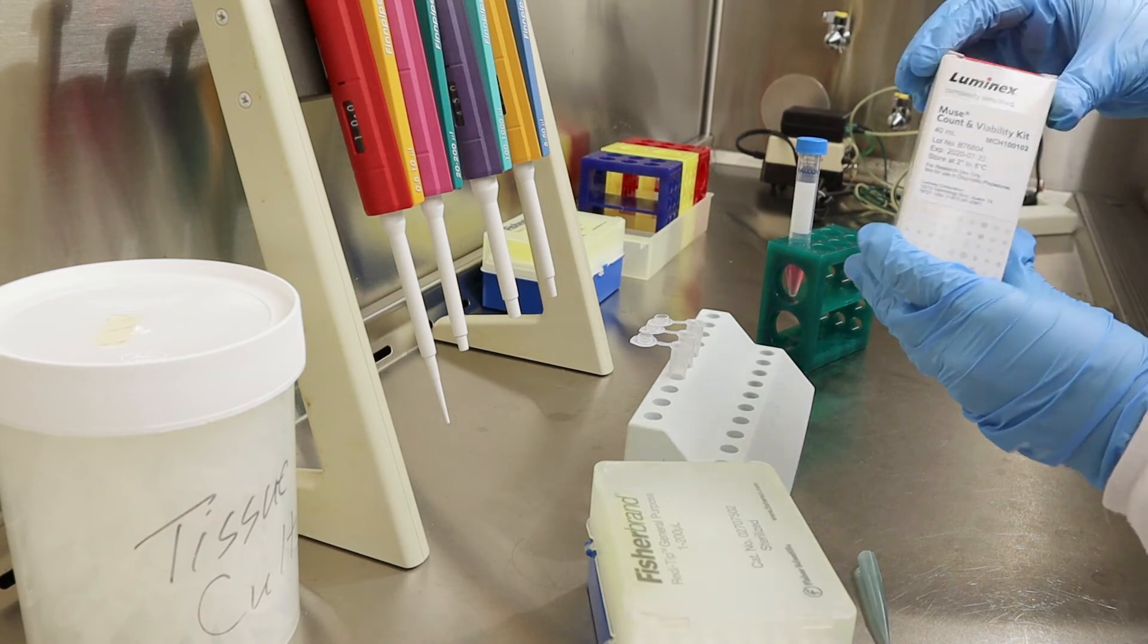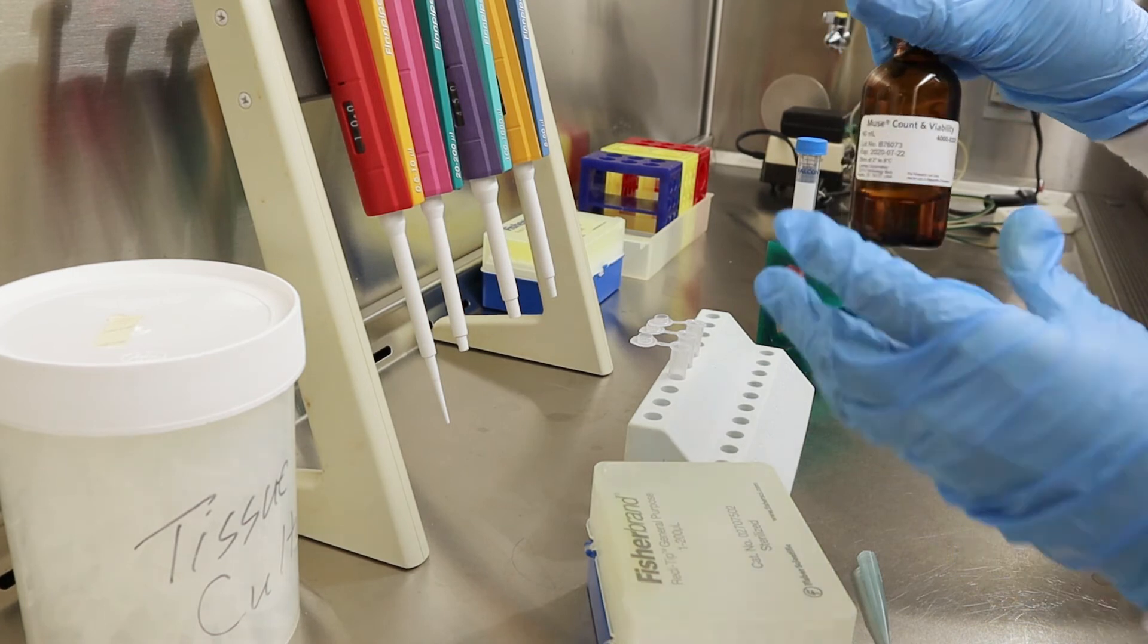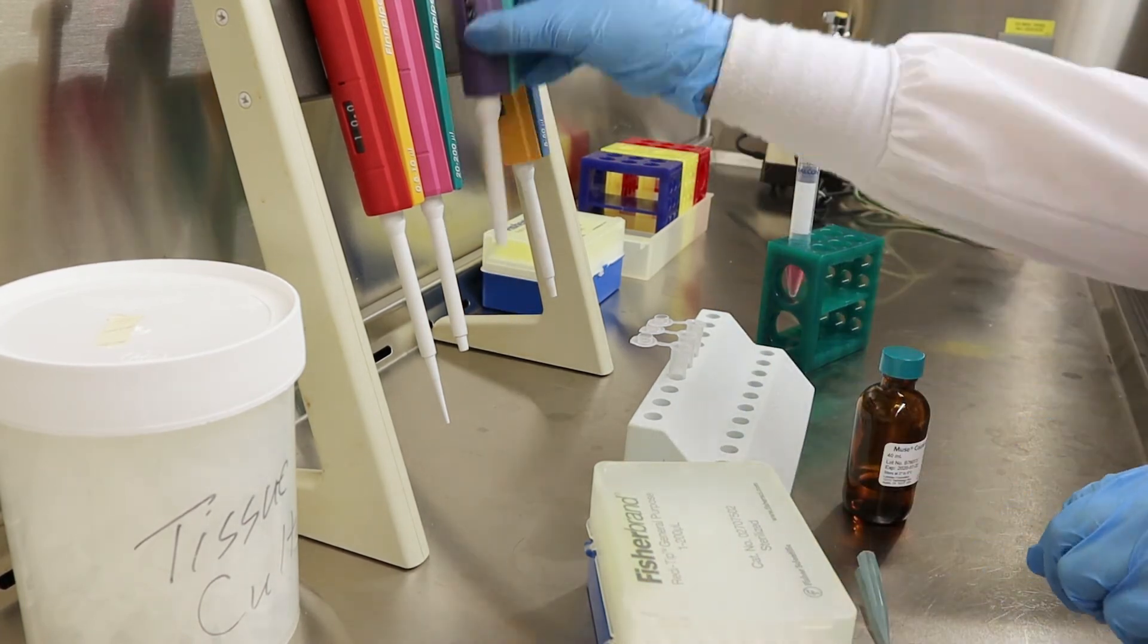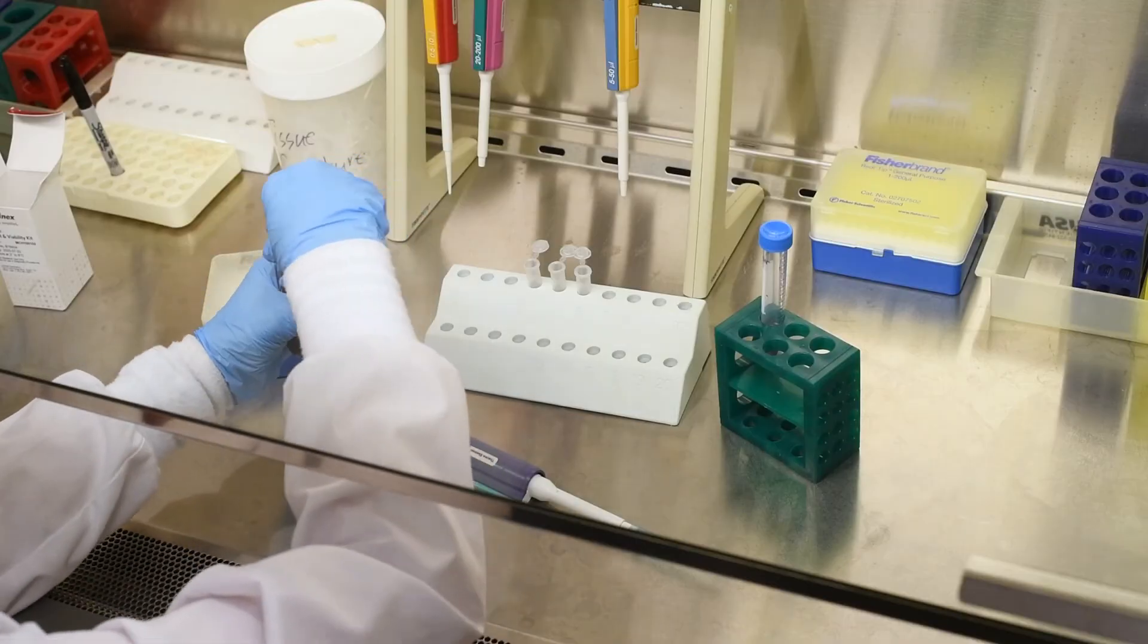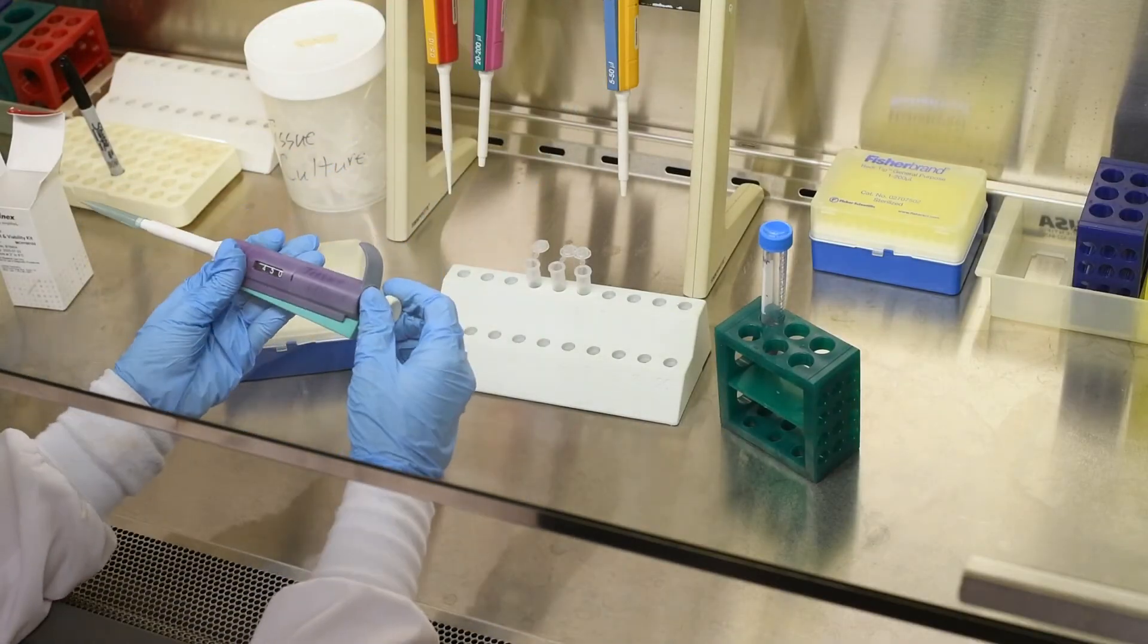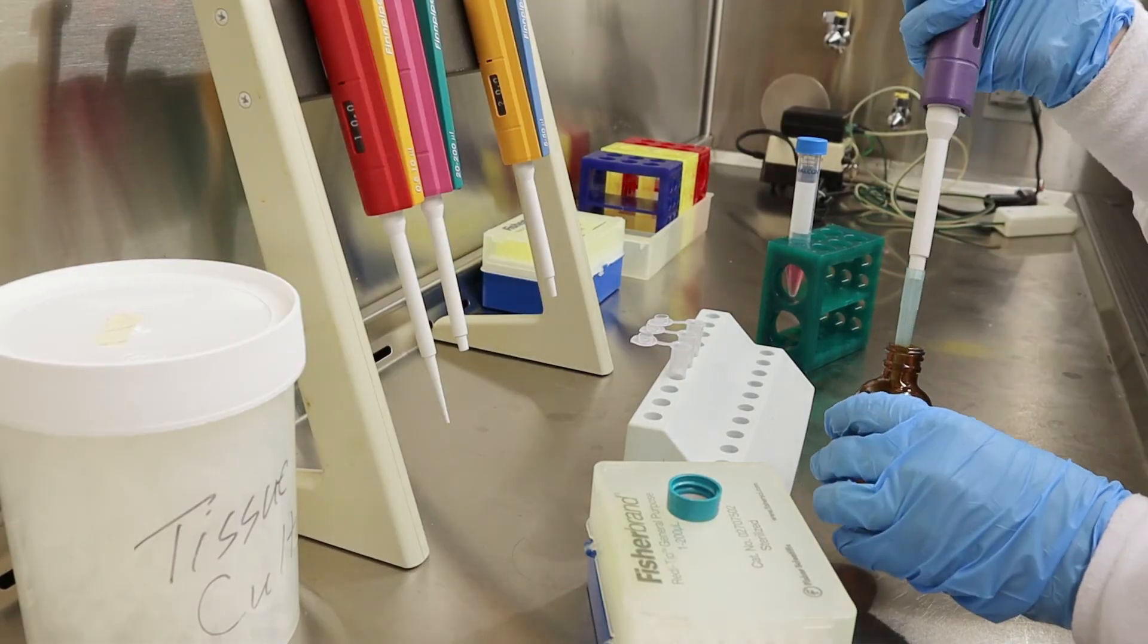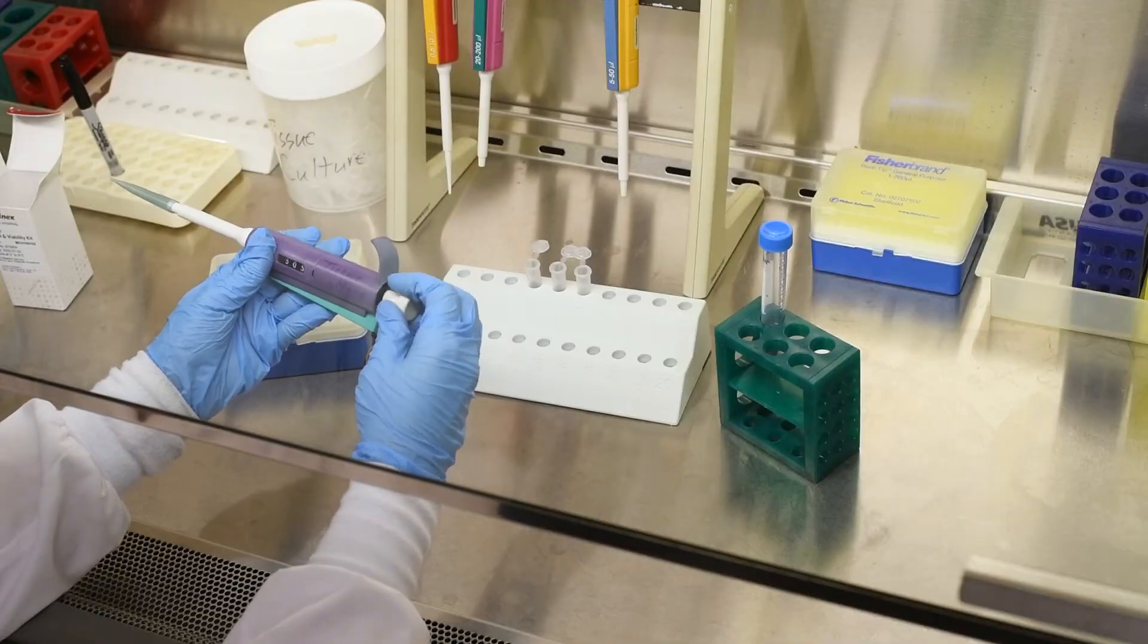The cell count and viability check utilizes a reagent that stains mammalian cell lines similar to trypan blue. Using a pipette, transfer 450 microliters of reagent to a 1.5-milliliter microfuge tube. Repeat this process for two more tubes with 380 microliters and 780 microliters of reagent, respectively.